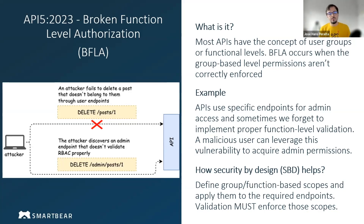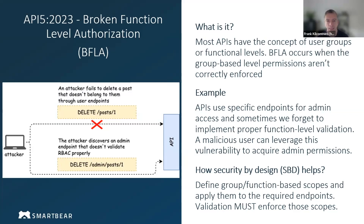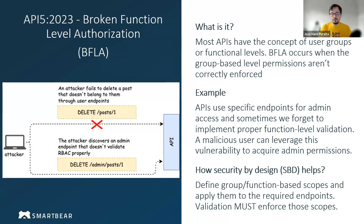To prevent this issue, the first thing is to avoid making poor assumptions about the origin of traffic. Don't necessarily trust clients or assume all traffic comes from within the firewall. Treat your admin endpoints as if they were publicly exposed — because in many cases they will be. Apply function-based scopes strictly to those endpoints and make sure they're always validated appropriately. A zero-trust approach is very important: always consider all inputs as if they are coming from the public.